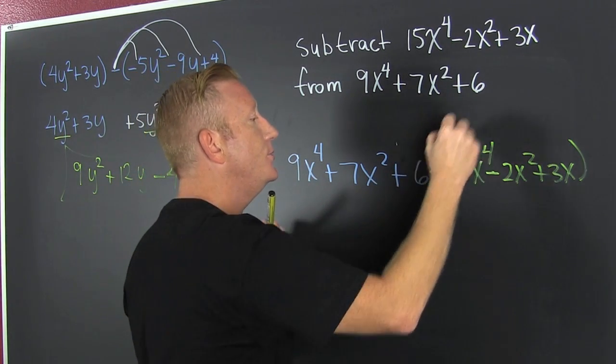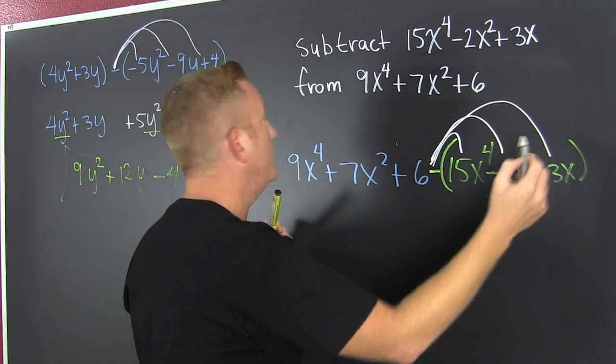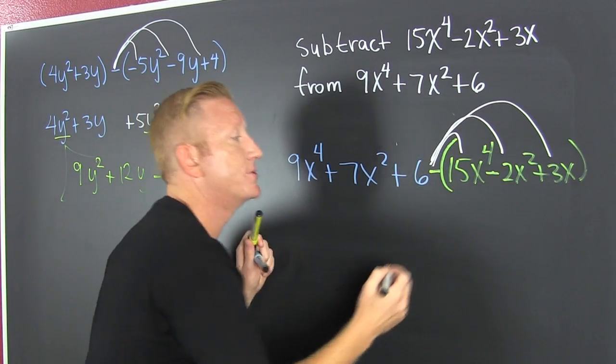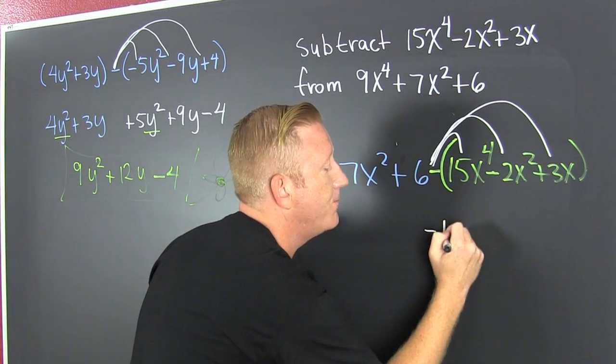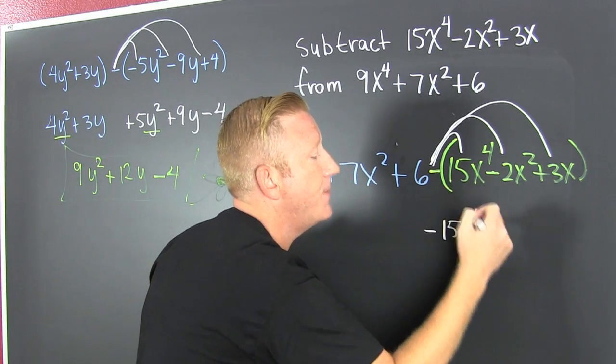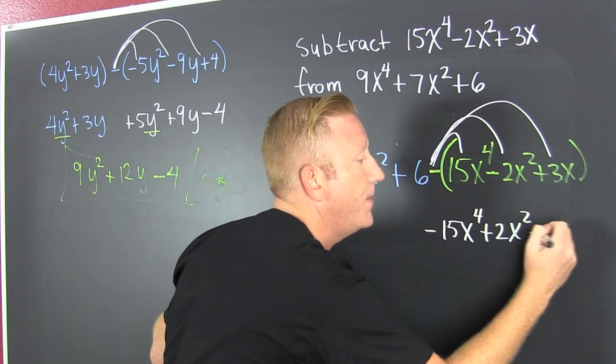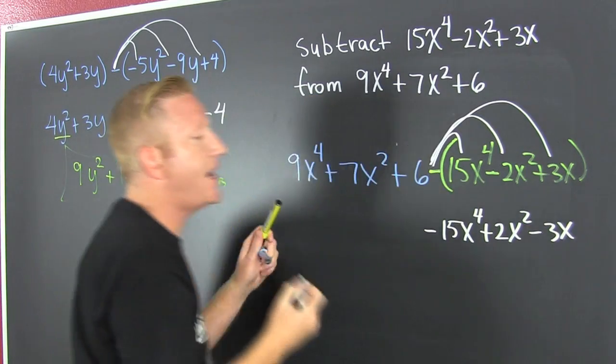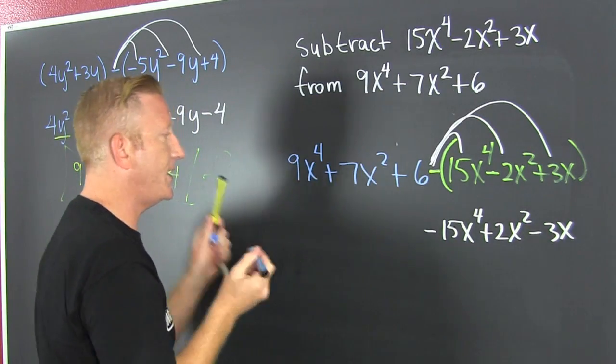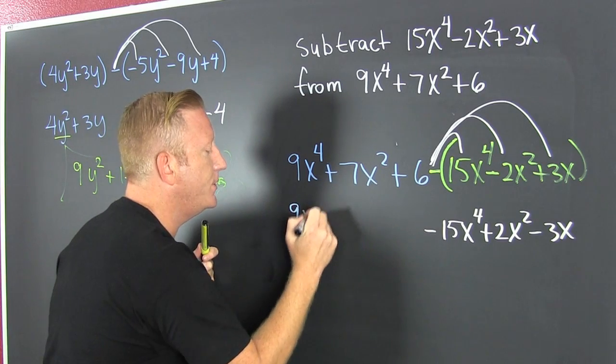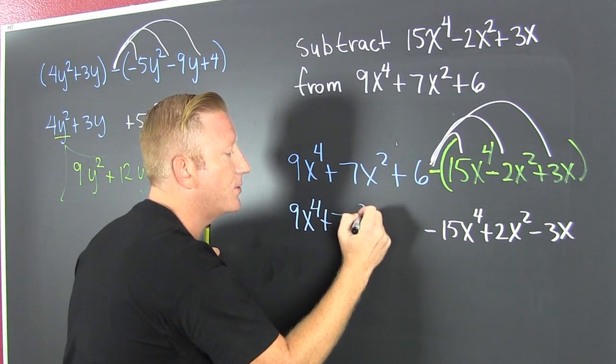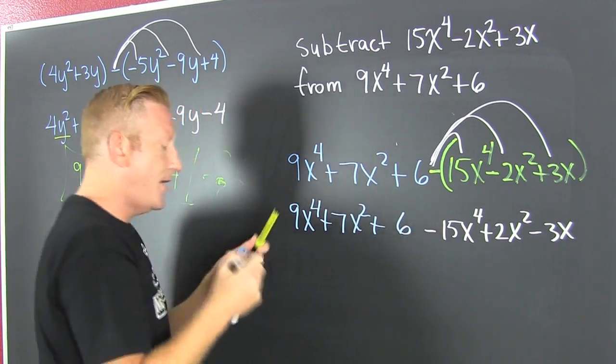That's minus 15x⁴. Minus and minus make plus 2x², and minus and plus make minus 3x. I'm gonna just bring down this blue - 9x⁴ + 7x² + 6.